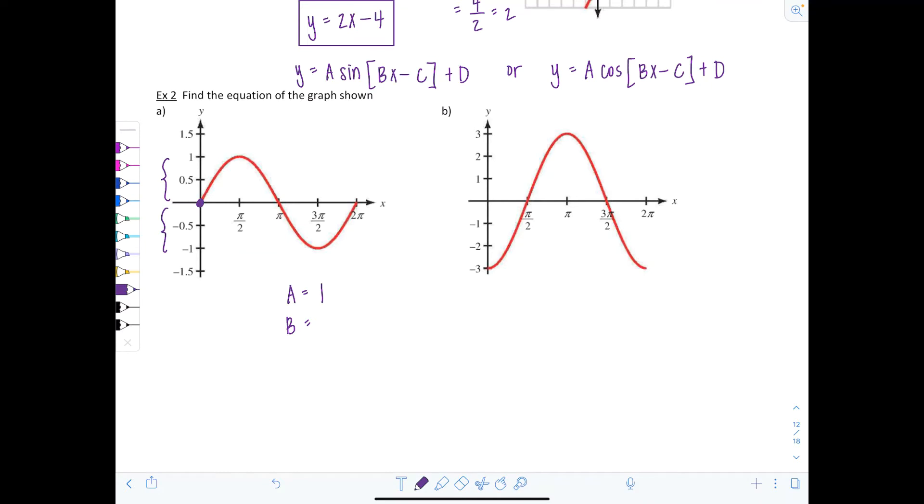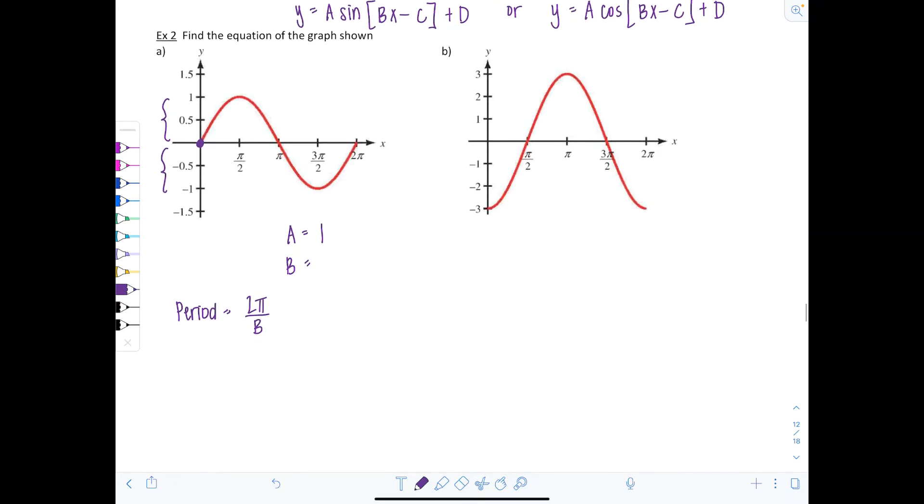Now B, how do we find B? Remember, when we were finding the period, the period was equal to 2 pi divided by B, right? All we need to do is rearrange this equation, this relationship. That means the period times B is equal to 2 pi. So if you want to find B, you take 2 pi and divide it by the period.